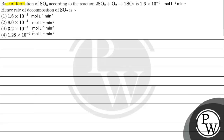Let's read this question. The question says: rate of formation of SO₃ according to the reaction 2SO₂ + O₂ → 2SO₃ is 1.6×10⁻³ mol per litre per minute. The options are: Option 1: 1.6×10⁻³ mol/L/min; Option 2: 8×10⁻⁴ mol/L/min; Option 3: 3.2×10⁻³ mol/L/min; Option 4: 1.28×10⁻³ mol/L/min.